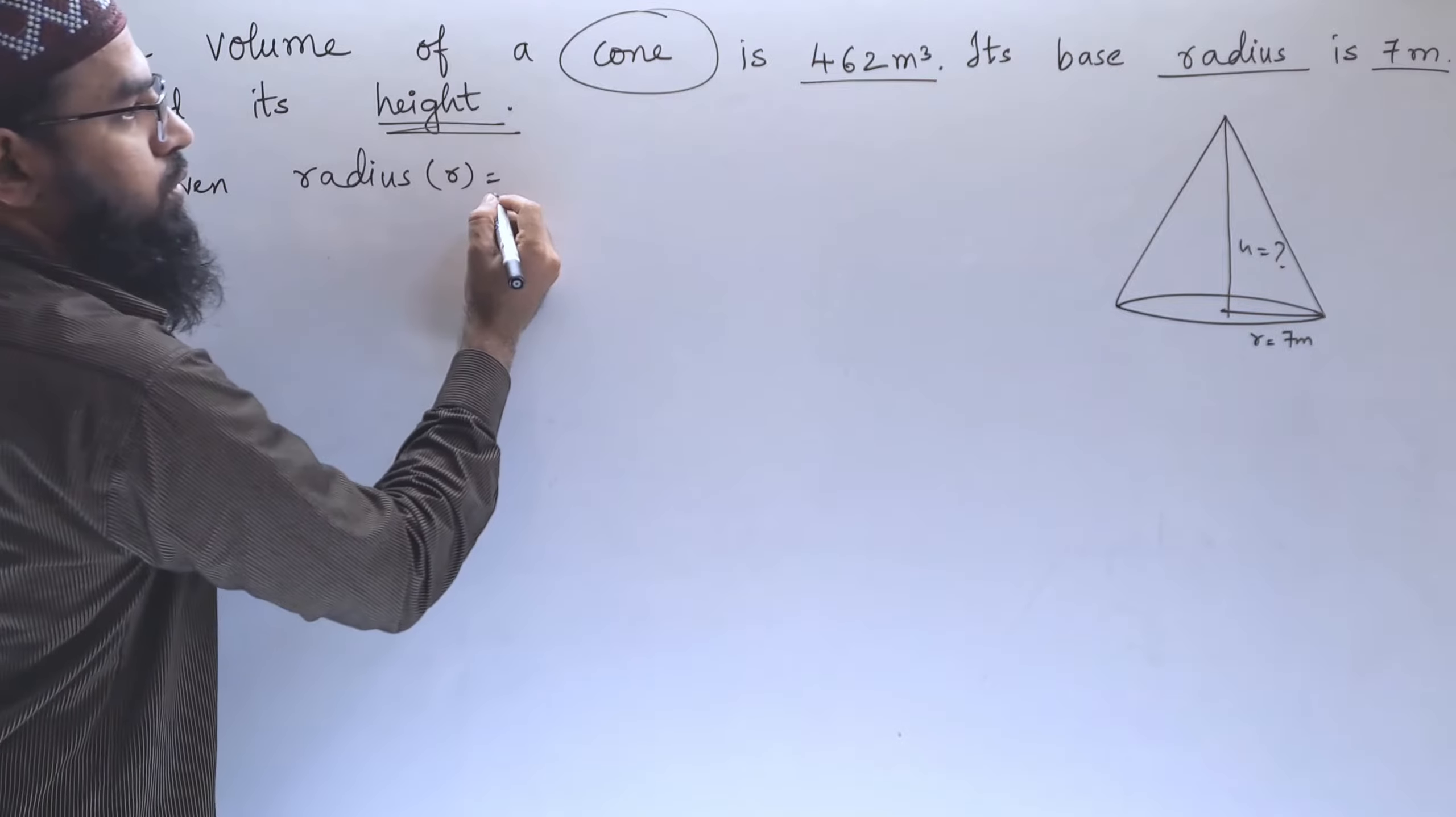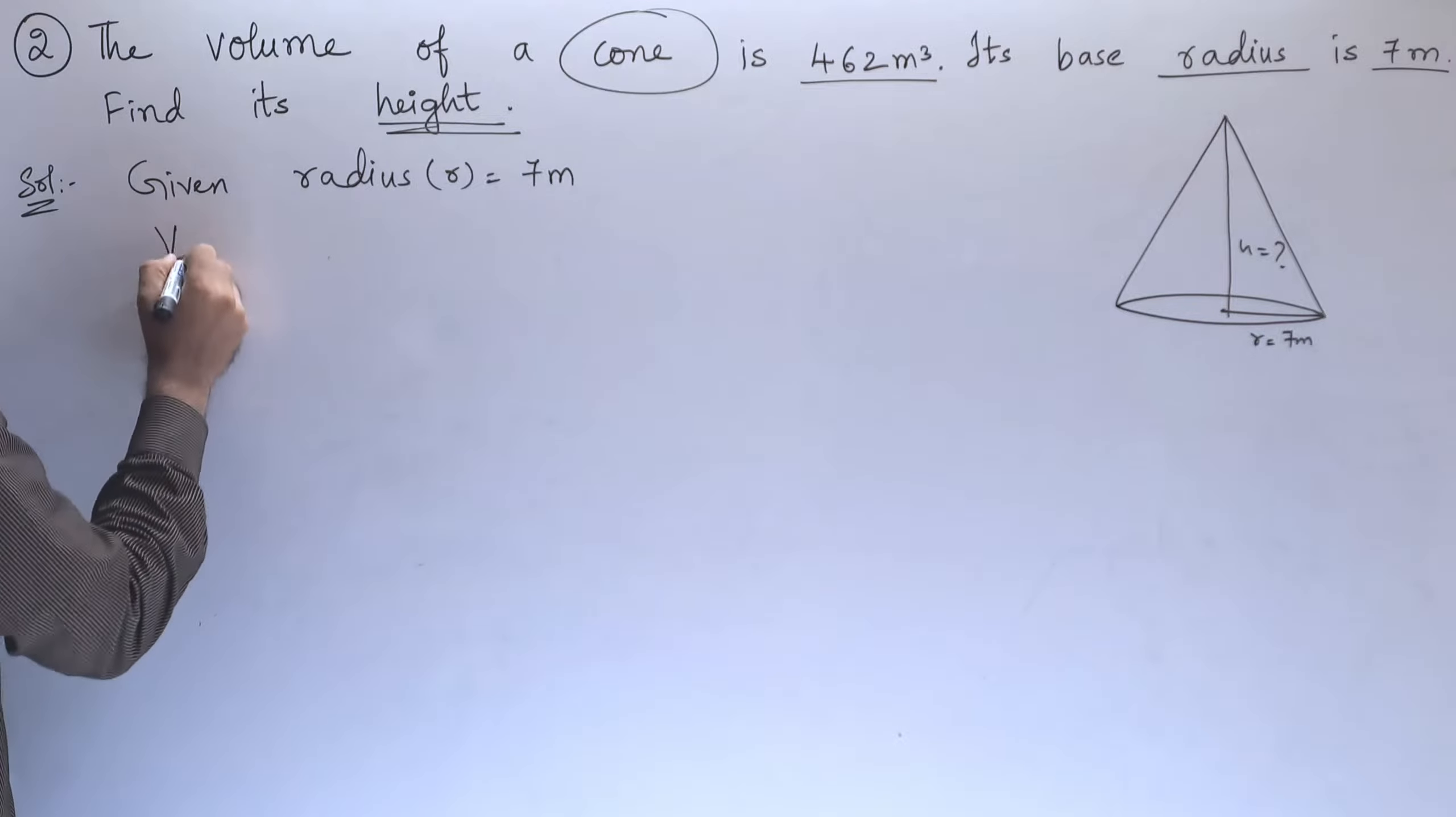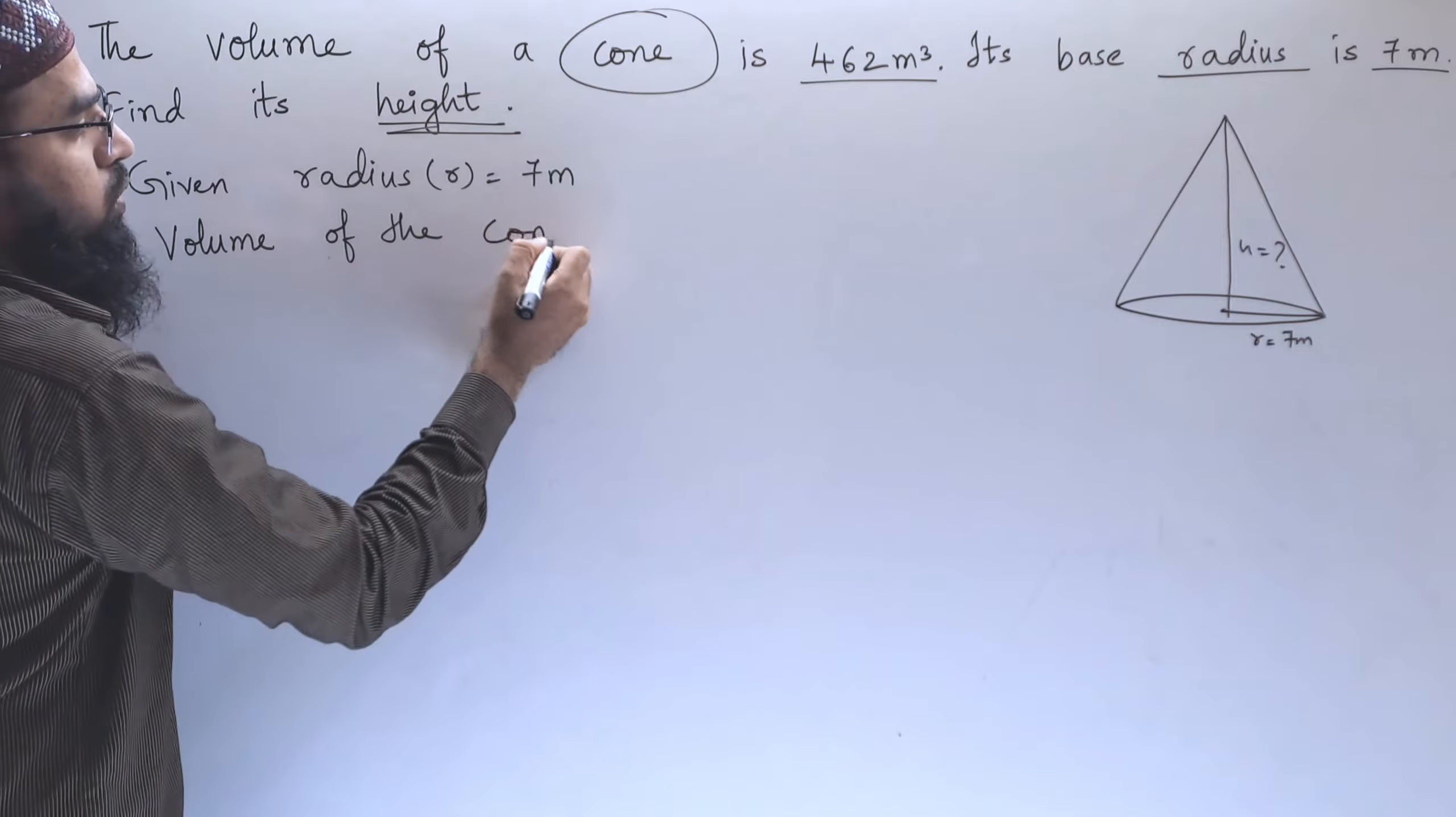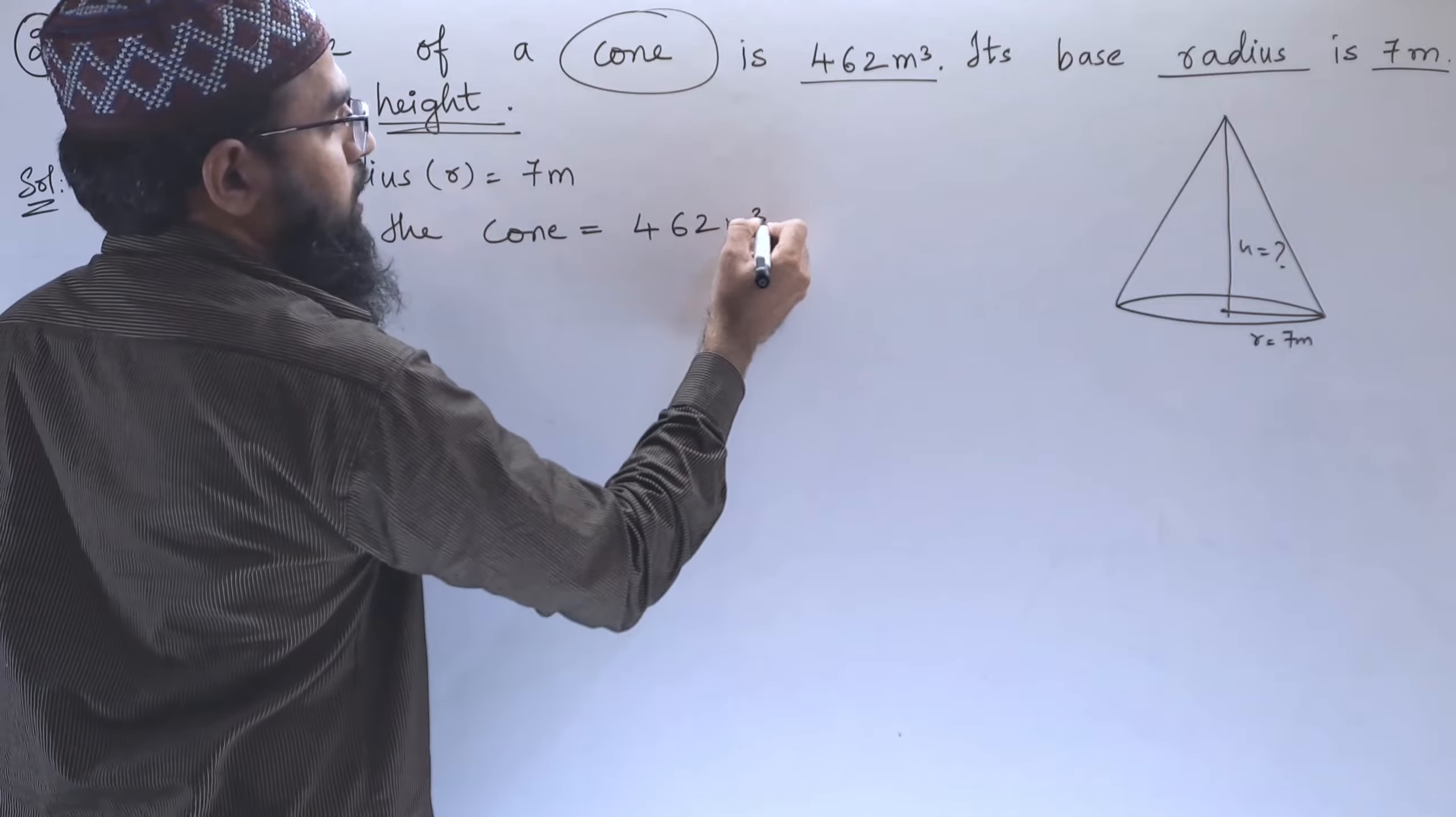r equals 7 meters. Next is the volume, and volume of the cone equals 462 cubic meters.